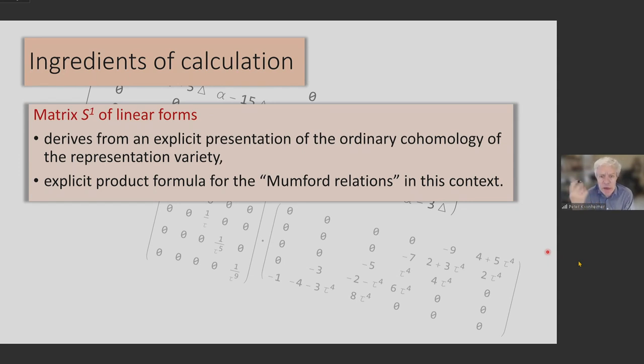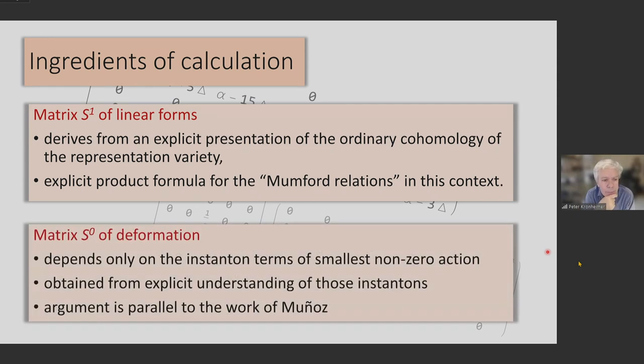And what it derives from is an explicit presentation of the ordinary cohomology. The cohomology is described by these Mumford relations. But in this particular case of the orbifold sphere, there's an explicit product formula for these Mumford relations. I don't call these the Lofka relations for the orbifold sphere. As an explicit product of linear forms, it's from that that you can write down very easily the matrix S1 of essentially the syzygies for these relations in the ordinary cohomology.